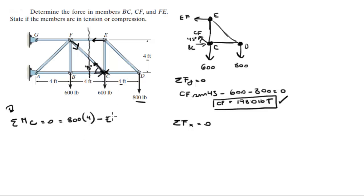minus EF also times 4 is equal to zero. So as you can see, EF is equal to 800, and it's positive, so that means it was going this way, which means this one's going this way and the member EF is 800 pounds in tension.